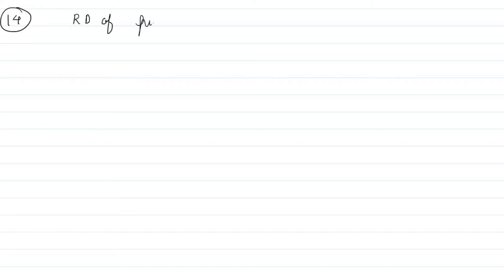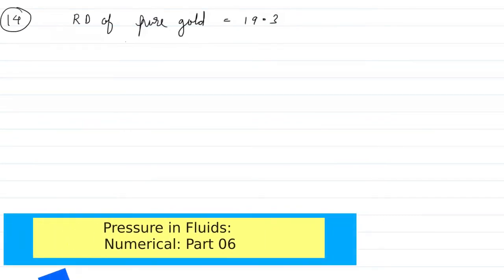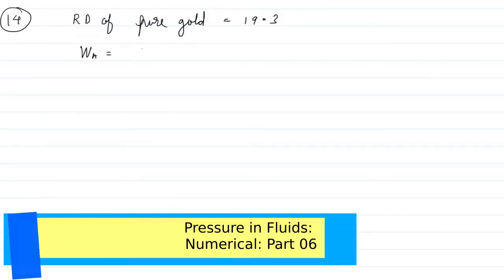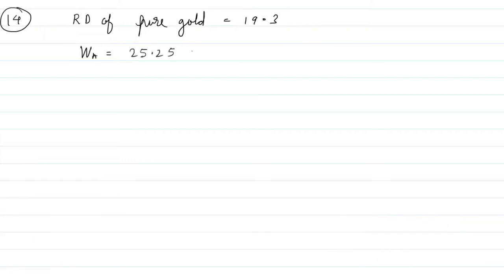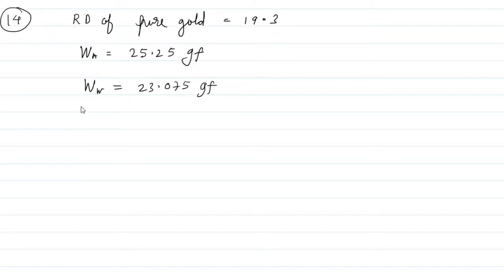The relative density of pure gold is 19.3. The weight in air of the ornament is 25.25 gram force, and the weight in water of the ornament is 23.075 grams. So what the jeweller or the person buying the jewelry has to do is find the relative density of the bangles.